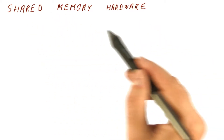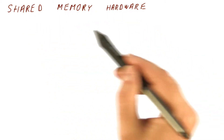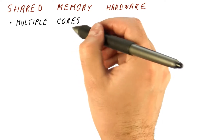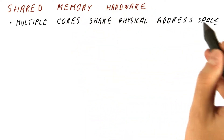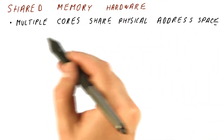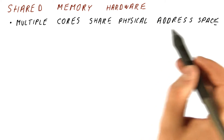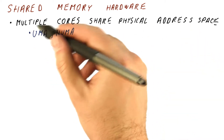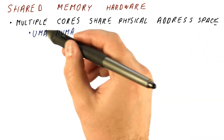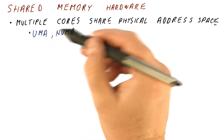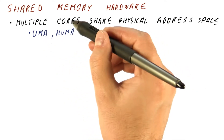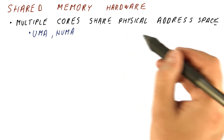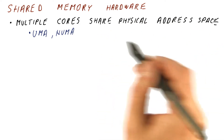What types of shared memory hardware do we have? We can have multiple single cores that share the same physical address space, so all of them can issue addresses to any memory address. The examples we have seen of this are UMA and NUMA — both of them have individual cores, each able to access the entire address space.